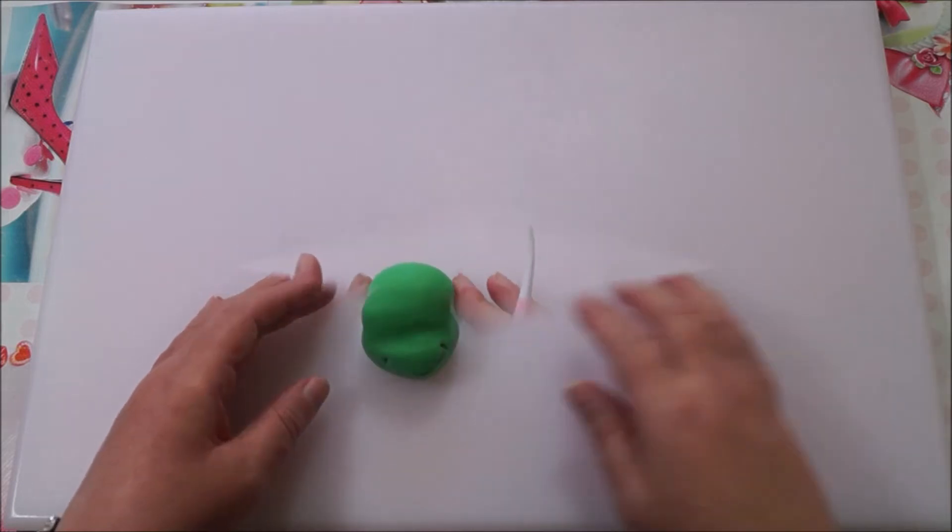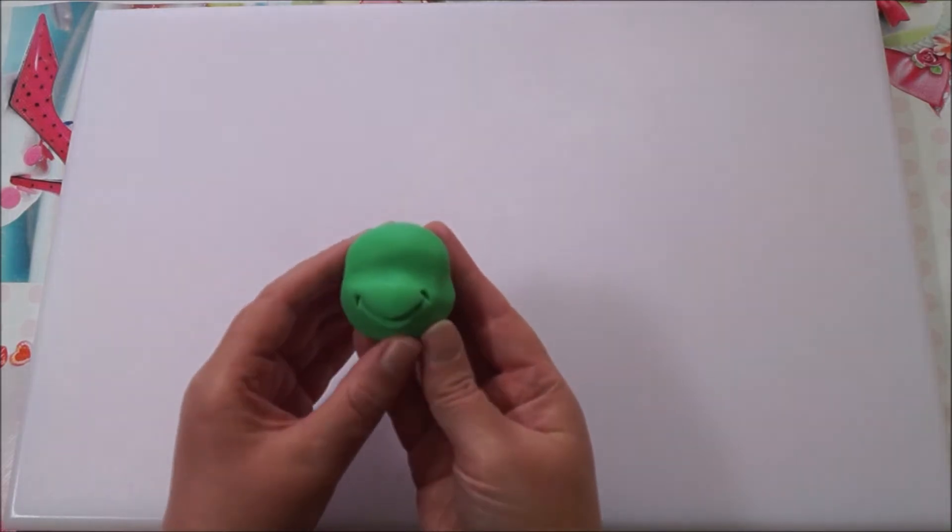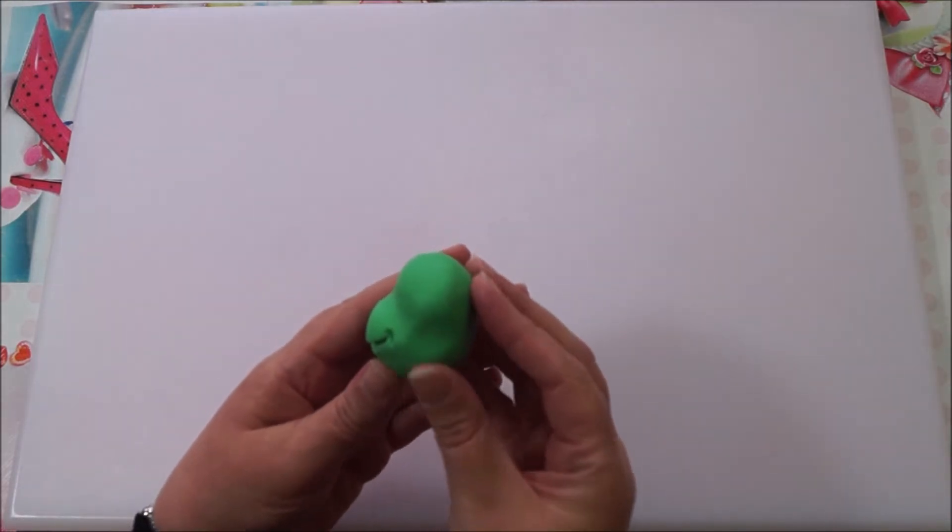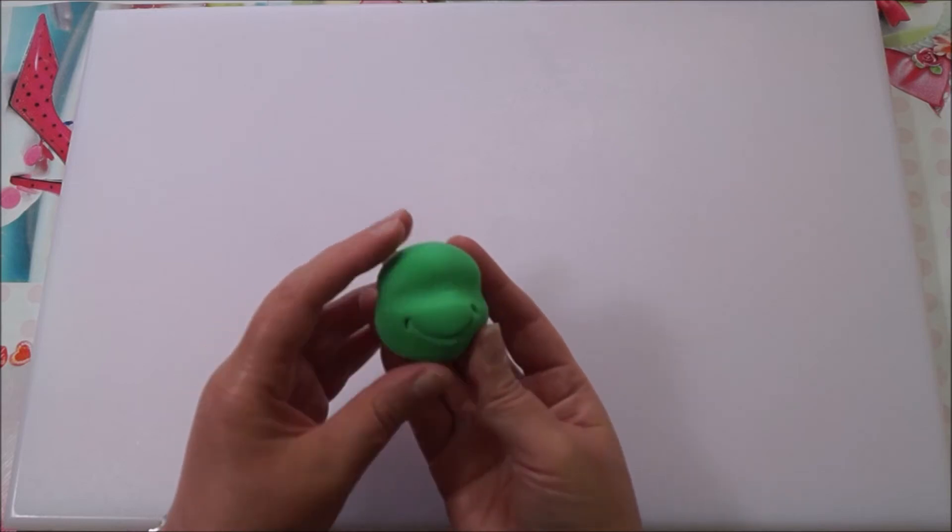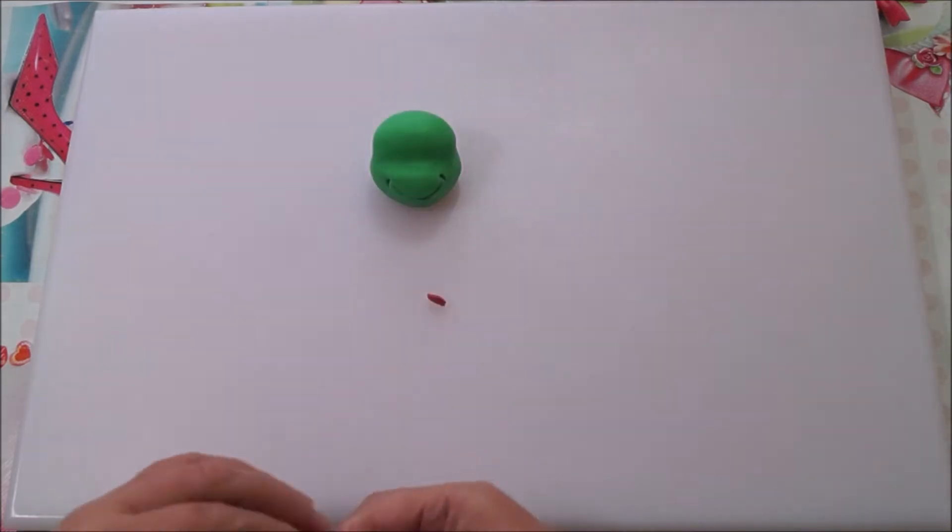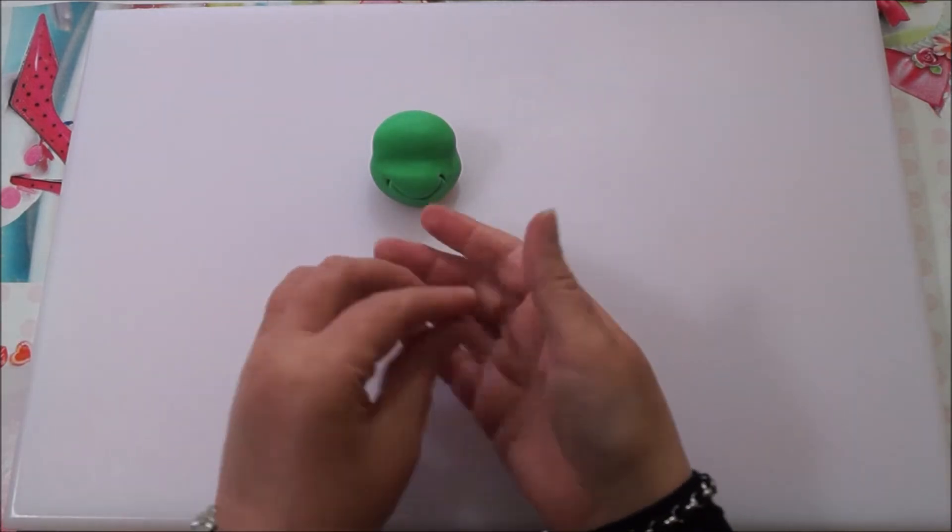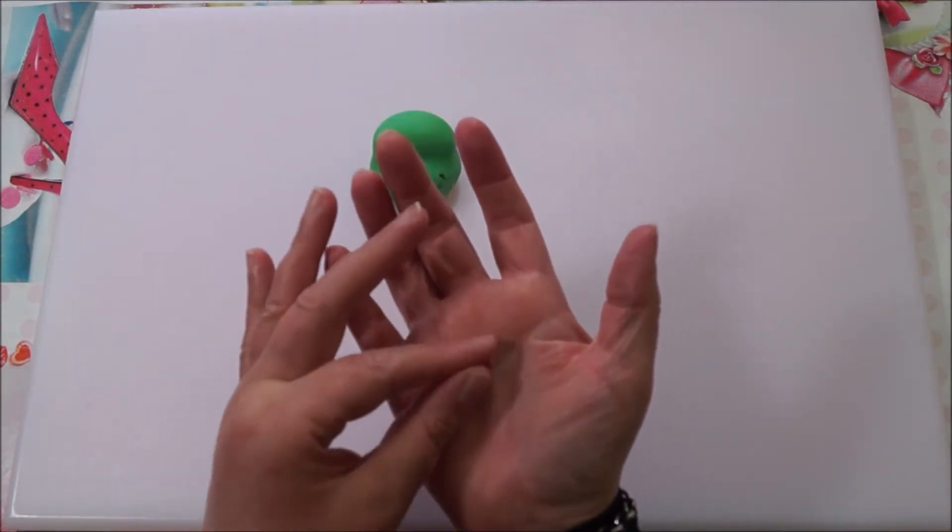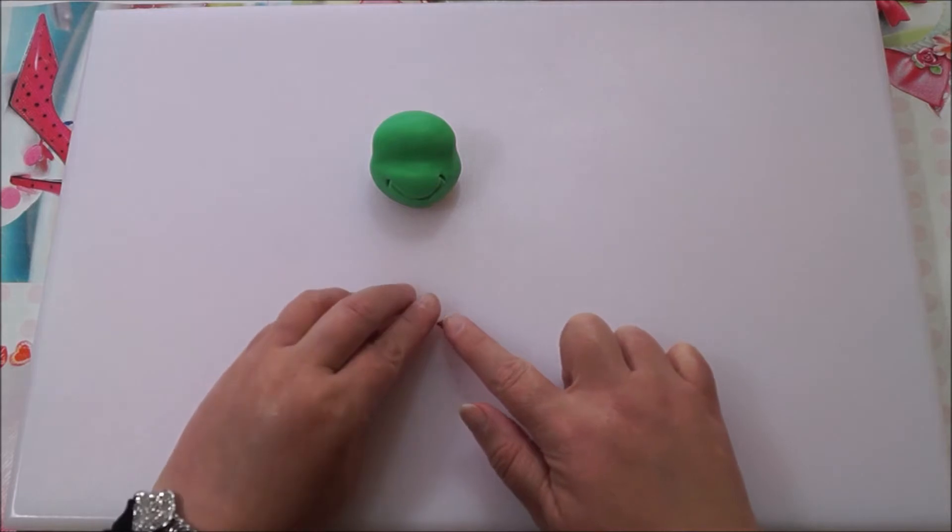It should be looking something like this at this stage—it's now starting to take shape. Take a small piece of red fondant to make the tongue, taper it at one end, and then flatten it down.